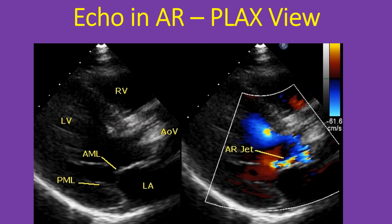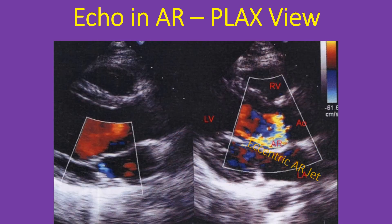This is a parasternal long axis view from another case. The aortic valve is seen as grossly thickened and calcified. The right panel shows the multicolored jet of aortic regurgitation along the ventricular surface of the anterior mitral leaflet. This is quite an eccentric AR jet, and hence assessment of severity will be difficult. Here is another eccentric jet of aortic regurgitation going along the posterior margin of the left ventricular outflow tract or the anterior mitral leaflet.